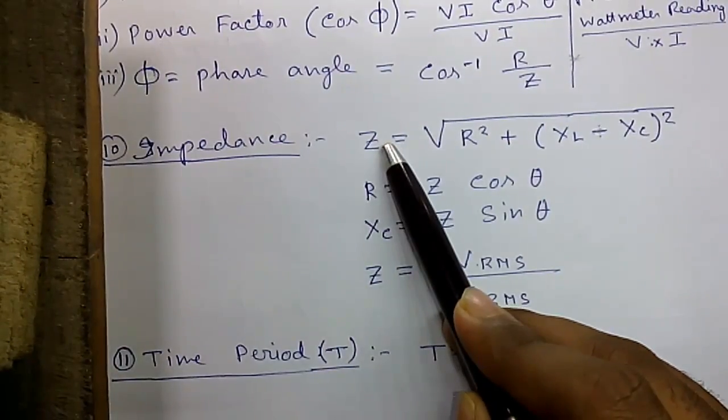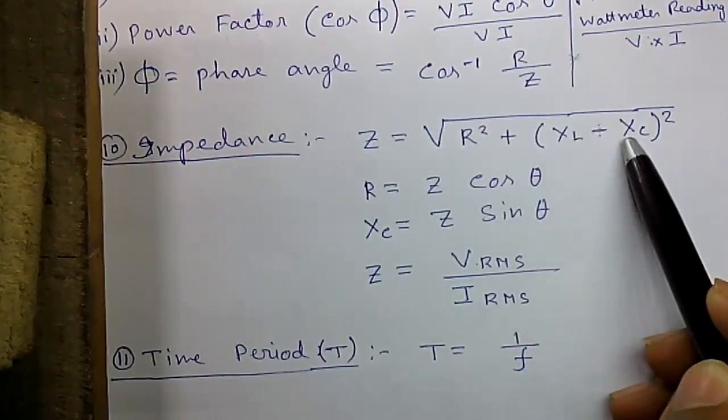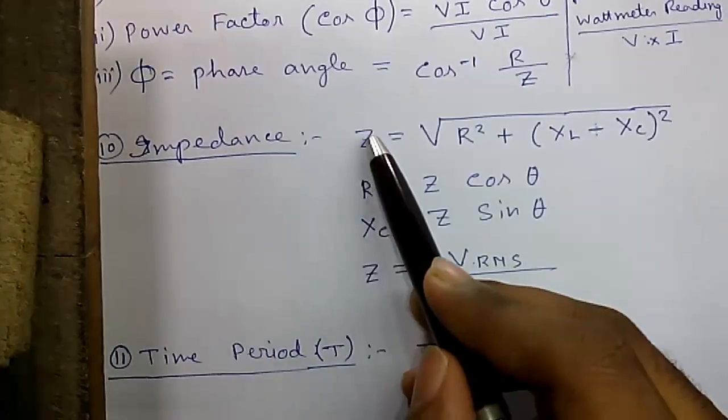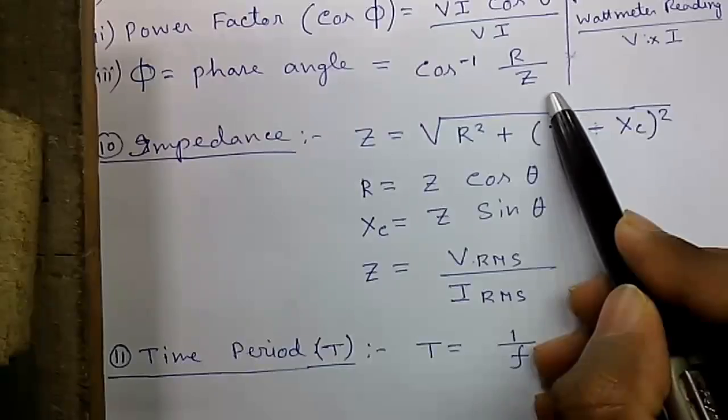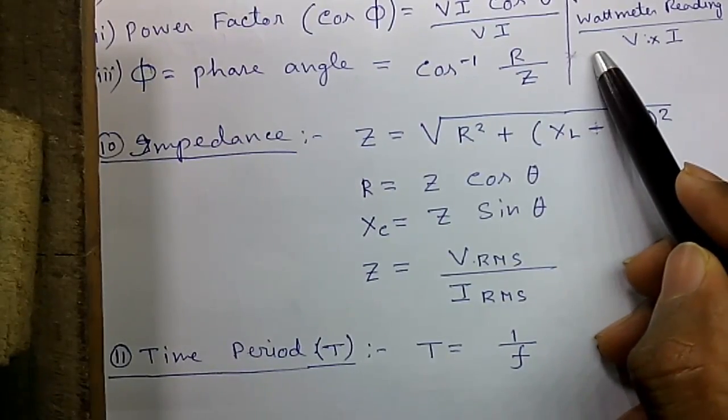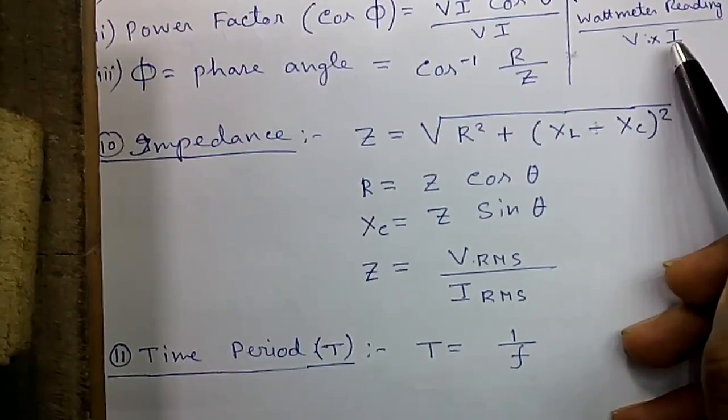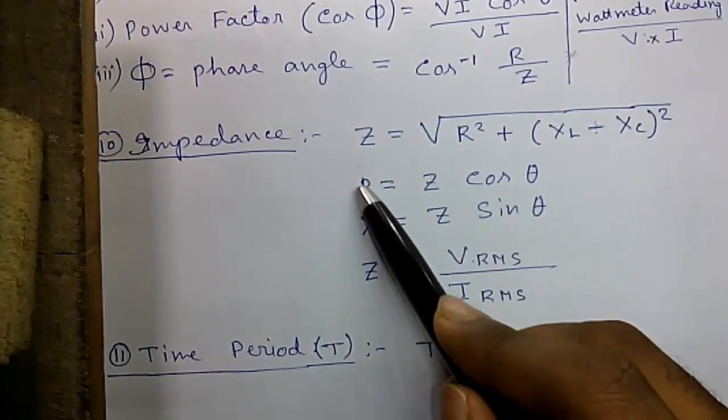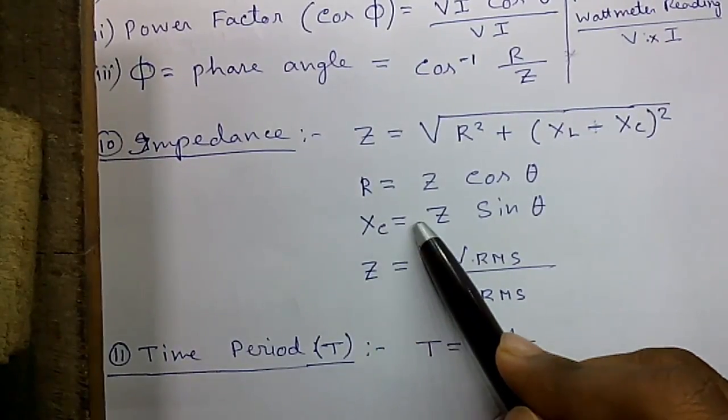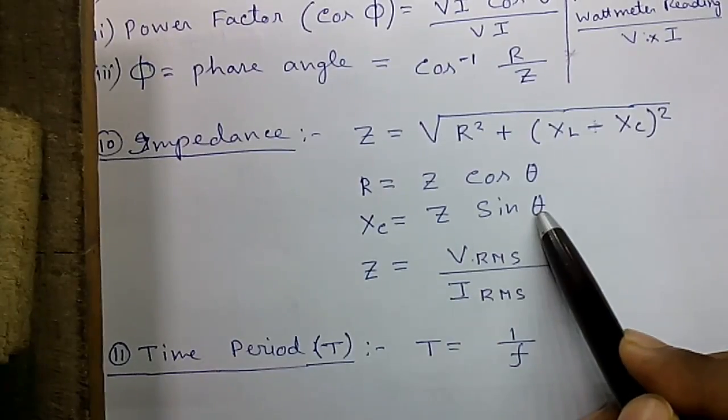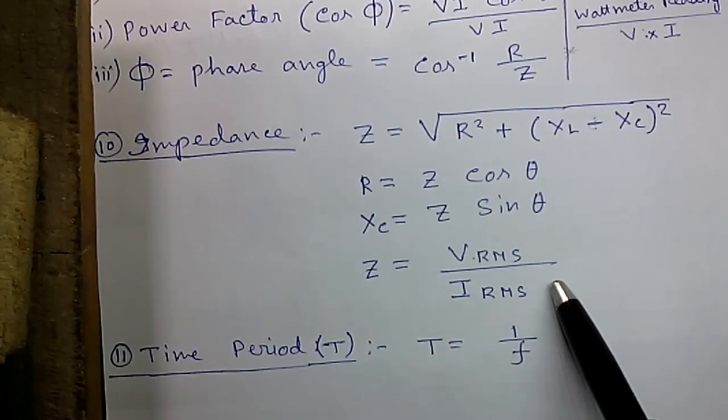Formula number 10, impedance which is Z equals root over R square plus XL minus XC whole square. This formula is useful in LRC circuit. LRC circuit means a circuit which has L for inductance, R for resistance and C for capacitance. In an LRC circuit, R is calculated as Z cos theta and XC is calculated as Z sin theta. Another formula for Z equals VRMS by IRMS.